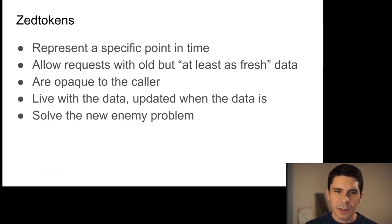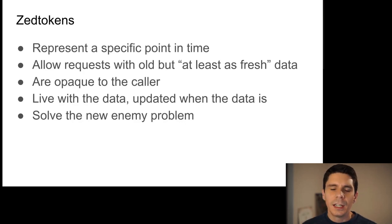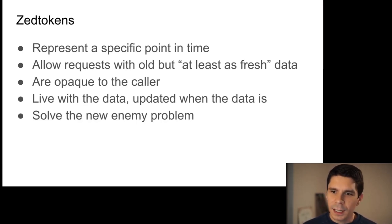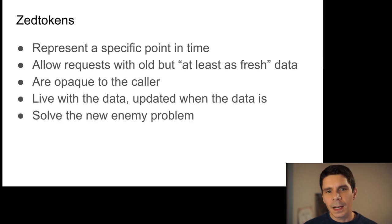The next and super important part of our API is the concept of Z tokens. Z tokens represent a specific point in time. As mutations are made to the underlying data and permissions, Z tokens allow us to make requests with slightly older data that still includes all the relevant mutations we're concerned with. They're opaque to the caller — fundamentally a serialized protobuf — and they live with the data, updated when the data is.